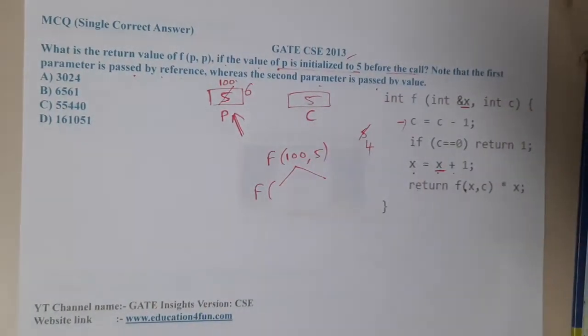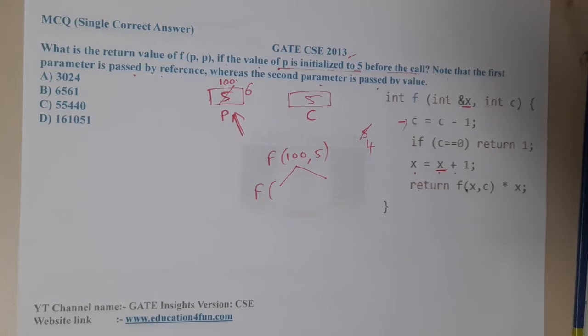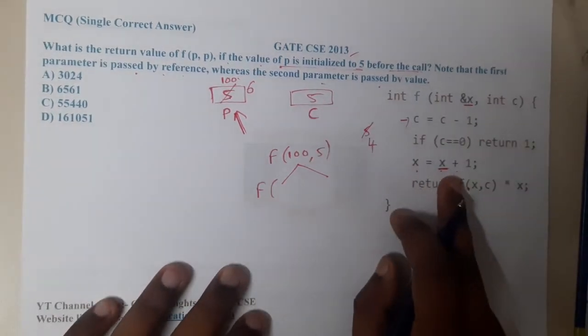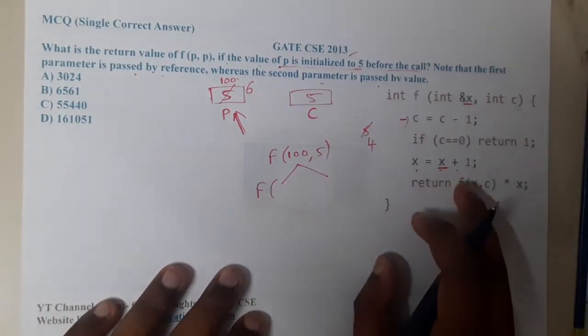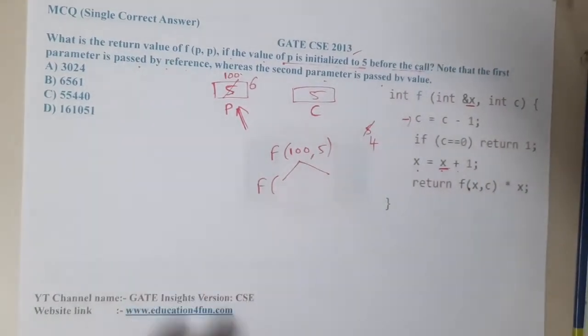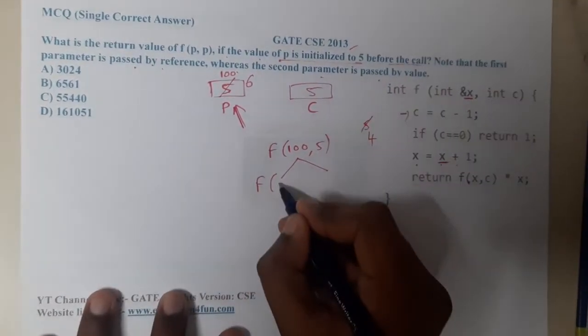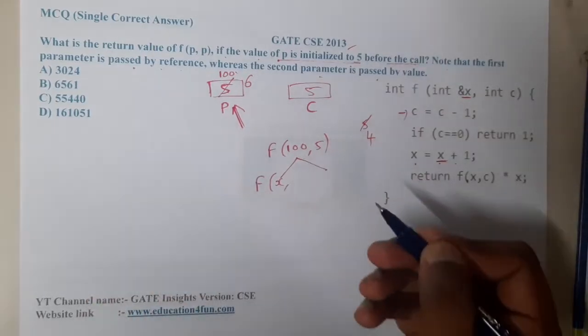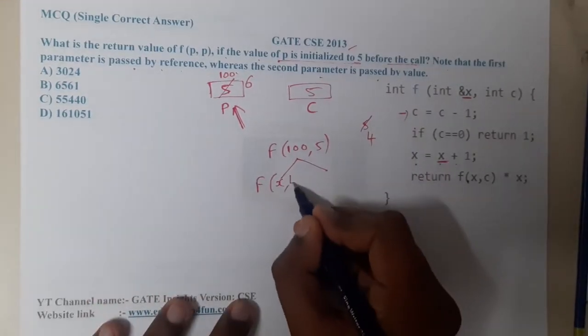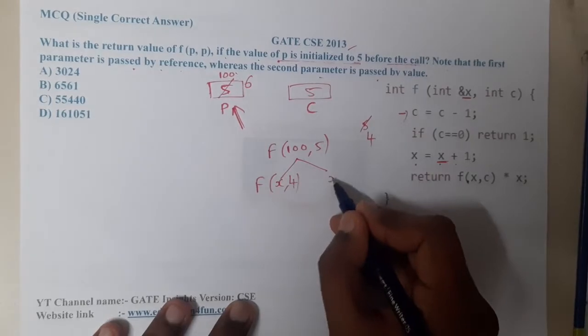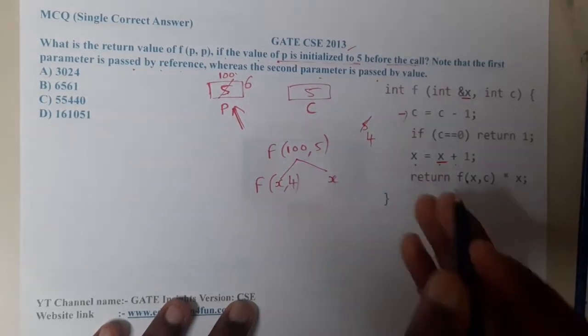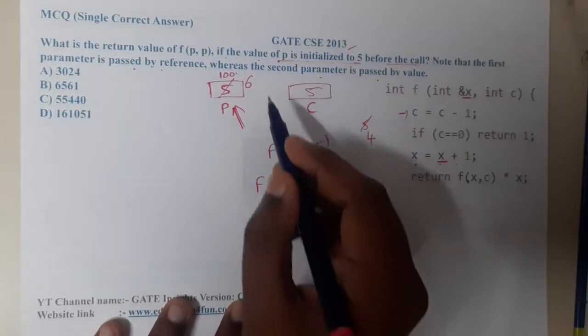If we are having x as 100 or 5, it should be address of or star of x. Let us reduce the confusion. The value will be 4 and here the value will be x. Let us think of x later on.